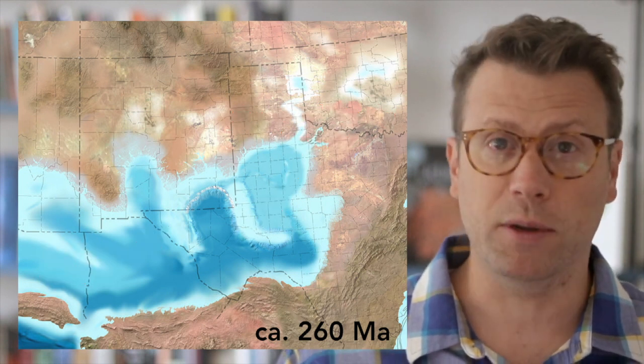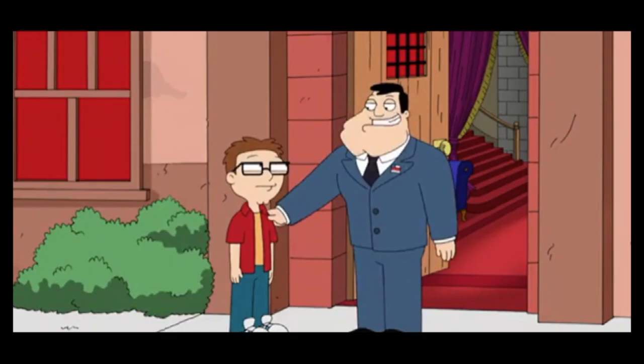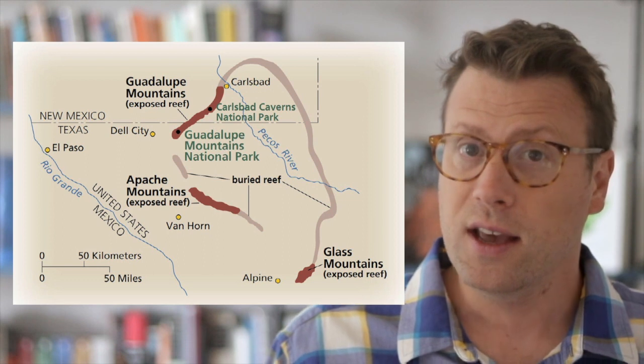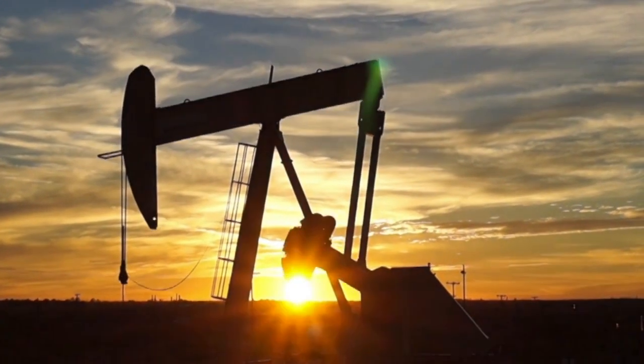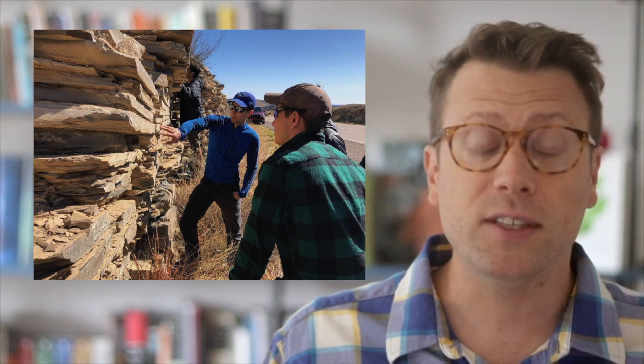The reef formed a narrow ribbon over 700 kilometers long that encircled the Delaware Basin where the water depths and temperatures were just right. Capitan Reef is exposed in the Guadalupe Mountains and a few other mountain ranges in West Texas, but is still mostly buried in the subsurface, where it's a major oil and gas reservoir and exploration target. Because of its importance to the oil and gas industry, as well as its exceptional exposure in the Guadalupe Mountains, the Capitan Reef system has been studied in detail for over a century. Geoscientists from all over the world make the pilgrimage to the park to learn about how reefs and carbonate depositional systems are expressed in the rock record.